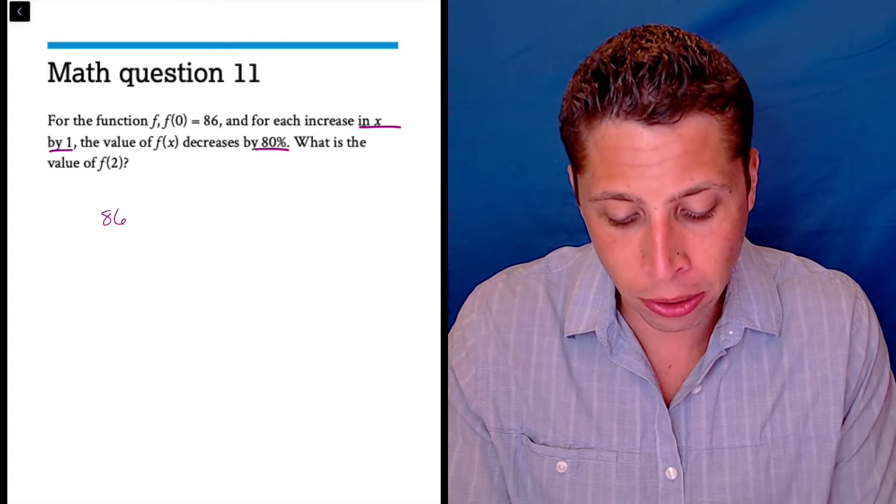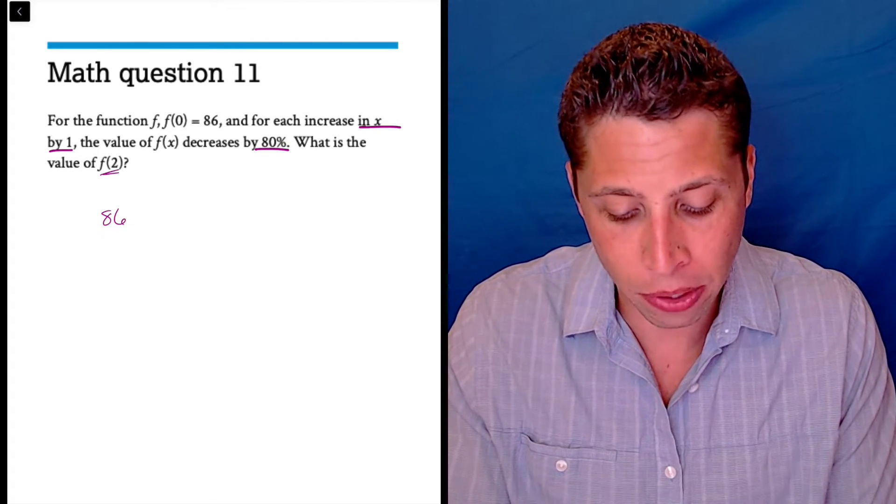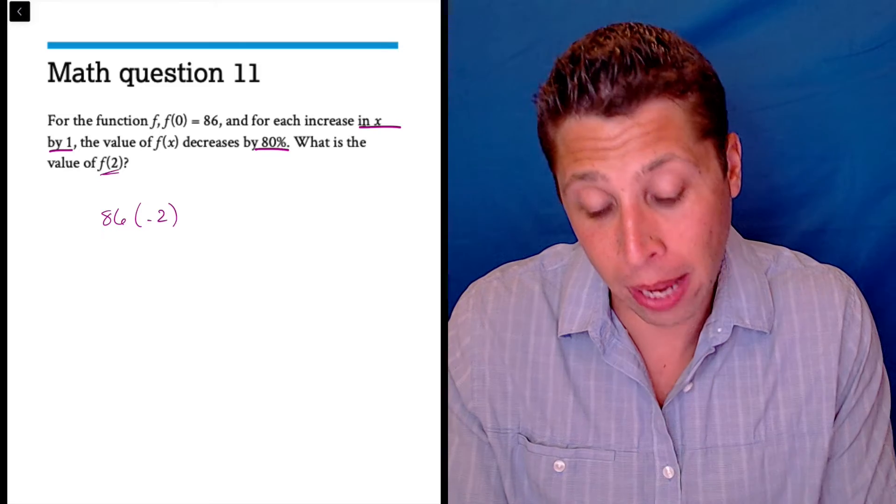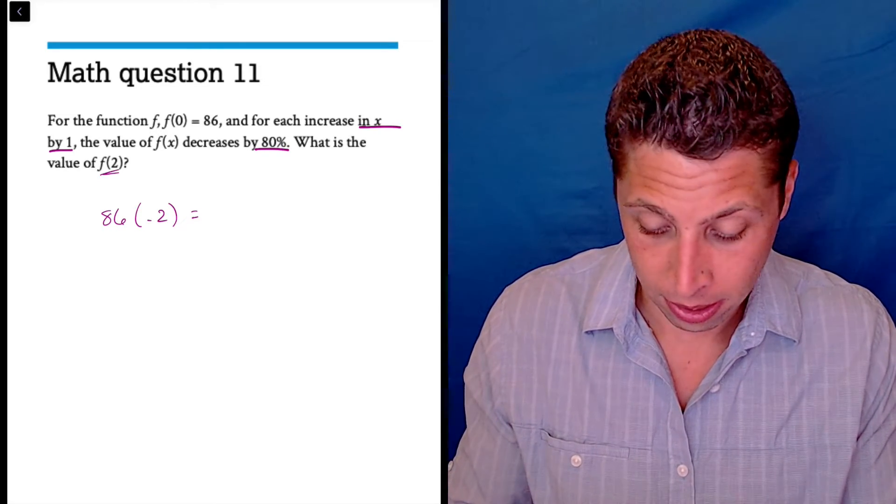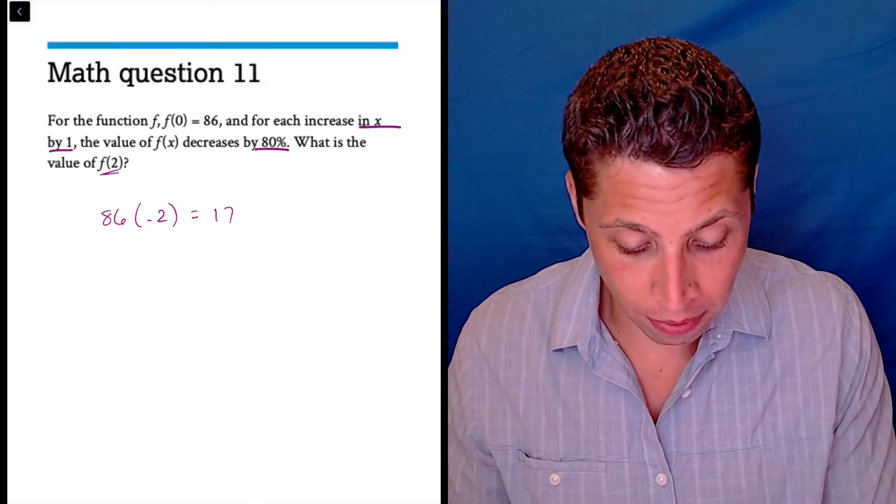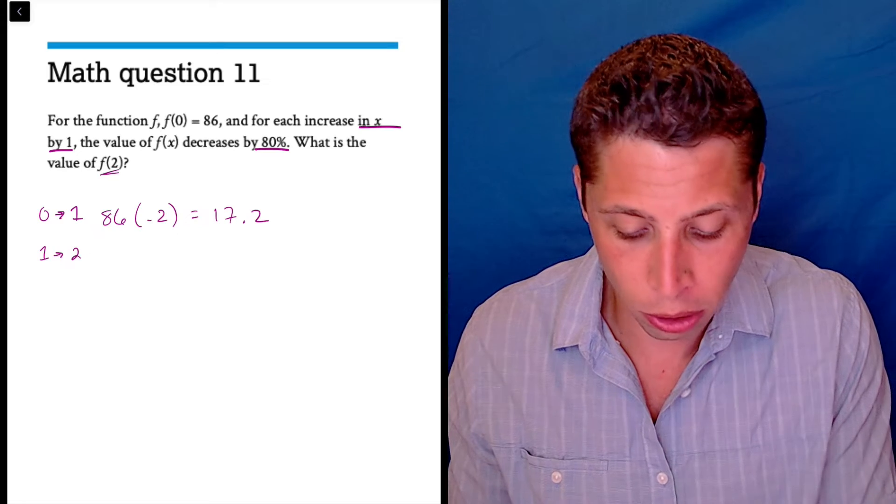and when we go from f of 0 to f of 1, because we need to get to f of 2, we're going to decrease by 80%, so you can multiply it by 0.2, so 86 times 0.2 is 17.2. That's to get from 0 to 1.